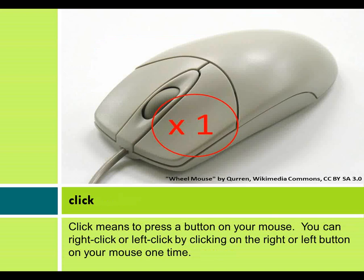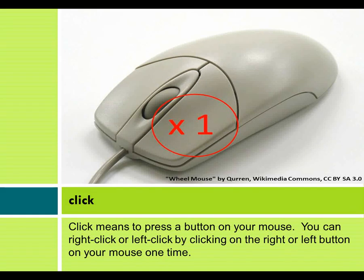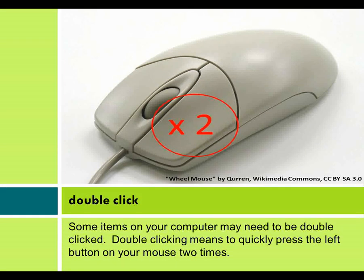Click. Click means to press a button on your mouse. You can right click or left click by clicking on the right or left button on your mouse one time. Double click. Some items on your computer may need to be double clicked. Double clicking means to quickly press the left button on your mouse two times.